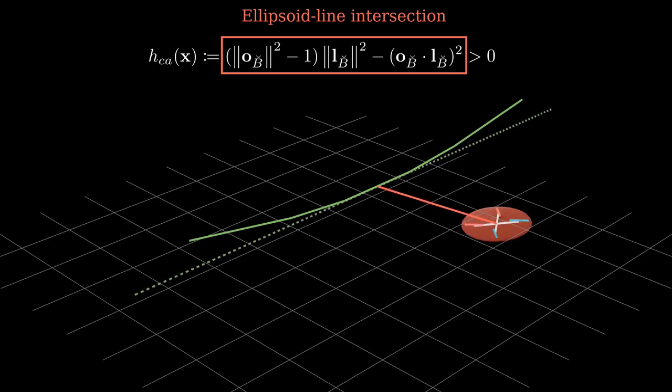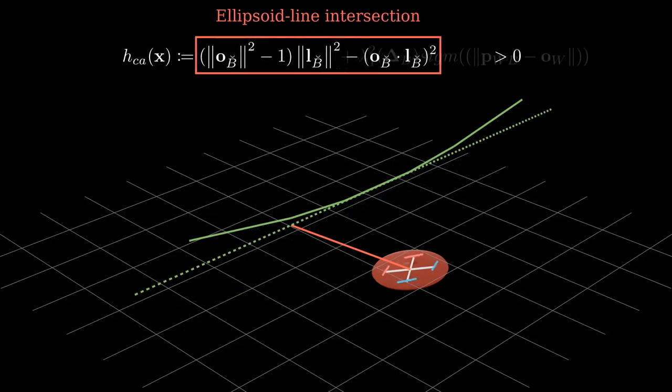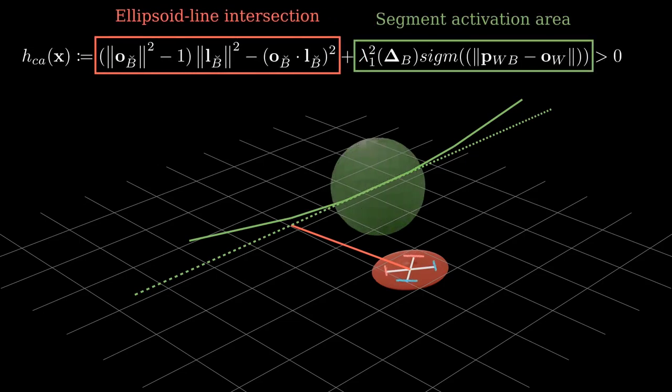However, this formula works by assuming infinite length lines, which can end up restricting an important fraction of free space. To solve this, we add an additional term so the collision with the segment is only modeled in its surrounding area.